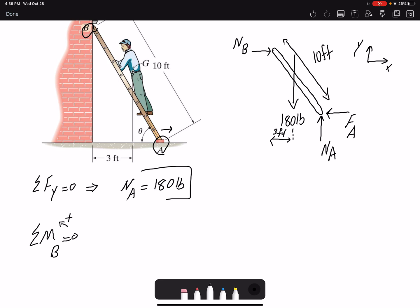I have the weight, it's going to create a clockwise moment about point B, so the moment would be negative: -180 times 3 feet. Then I have NA creating a positive moment, and the moment arm would be 10 cos 60.